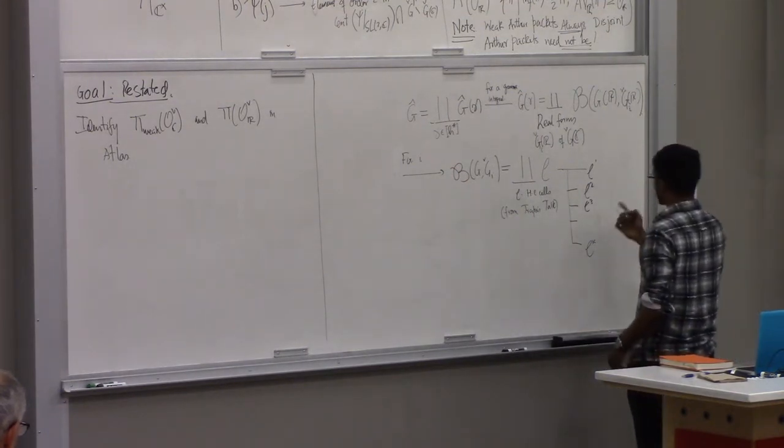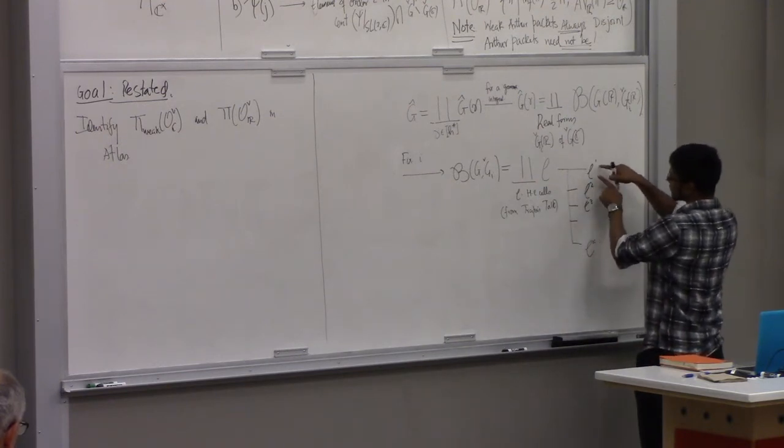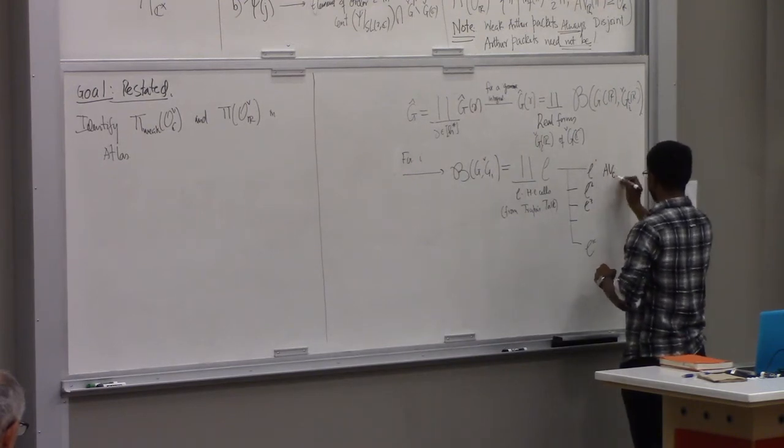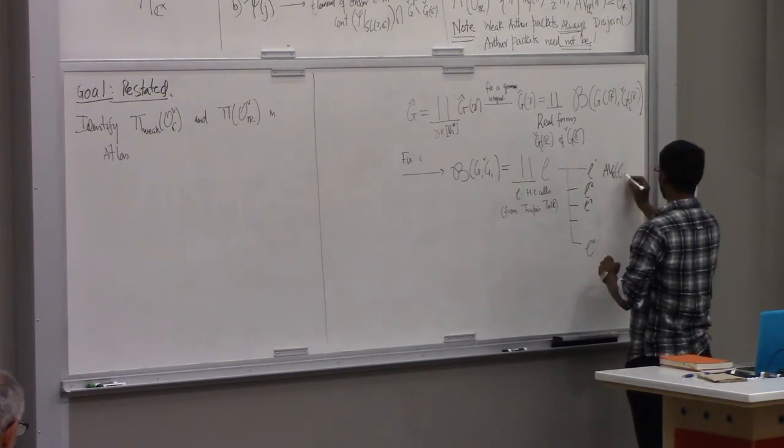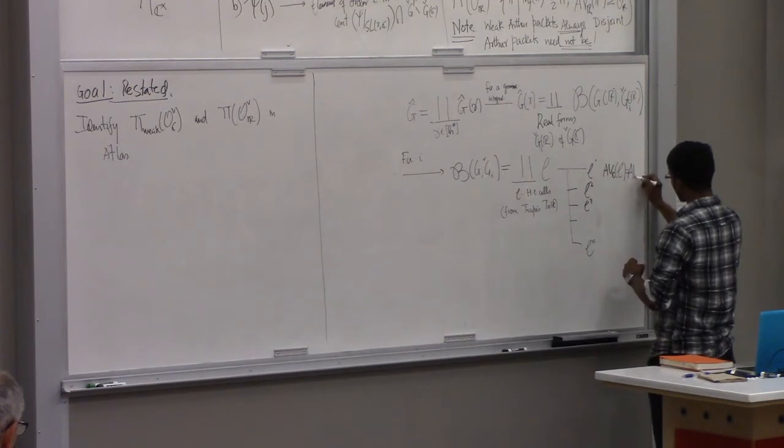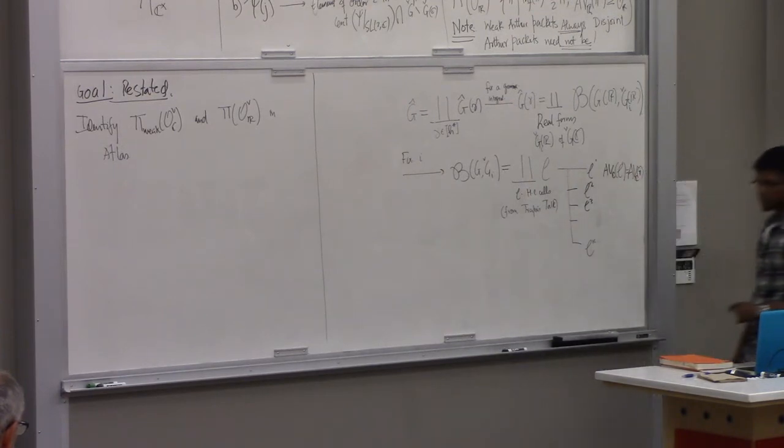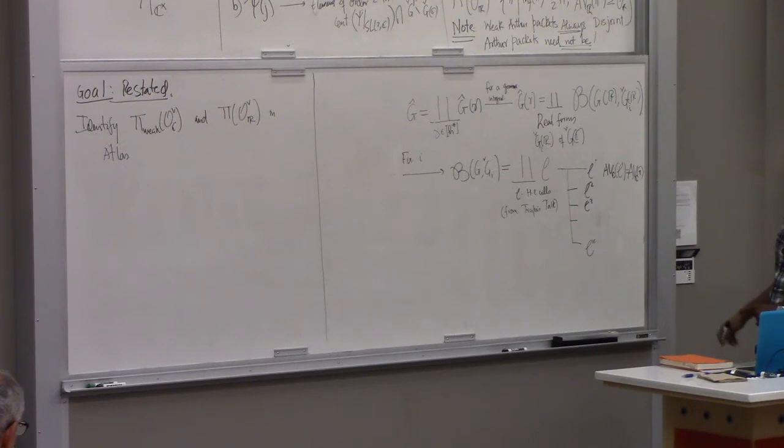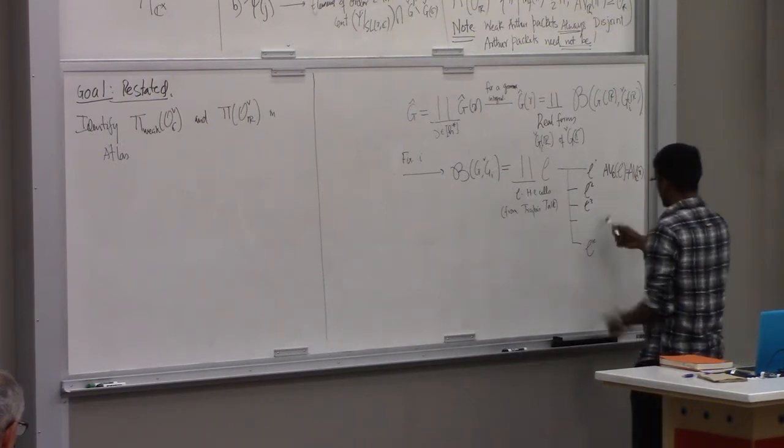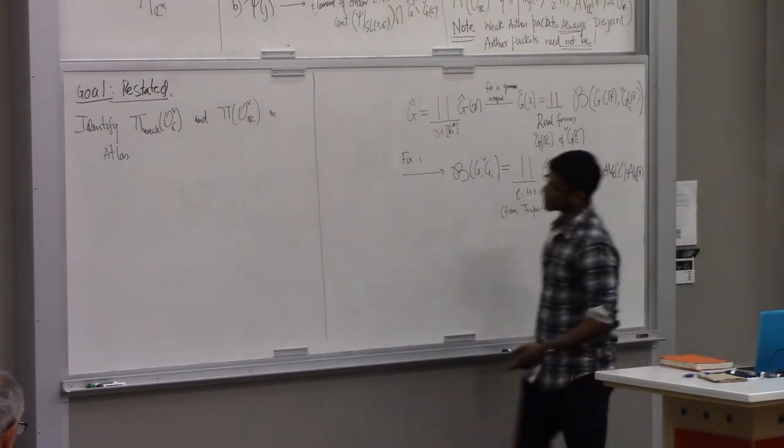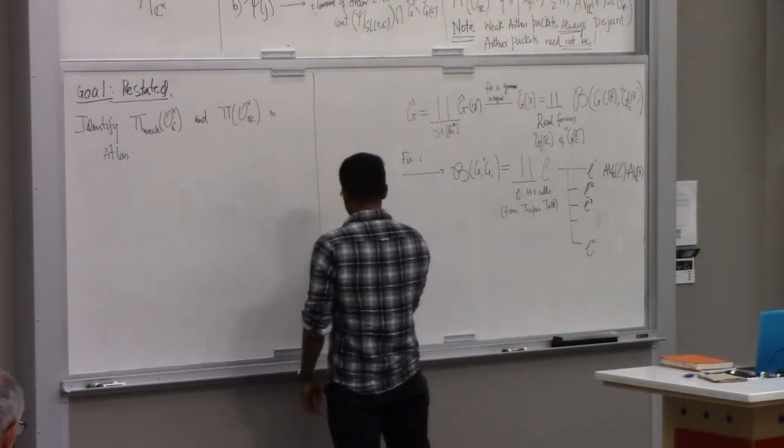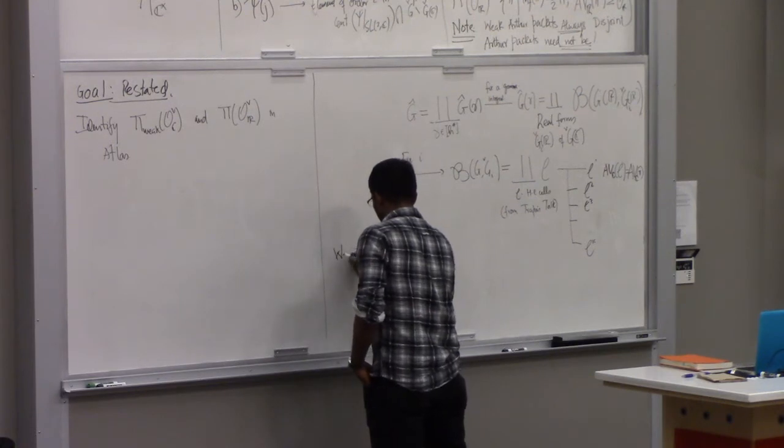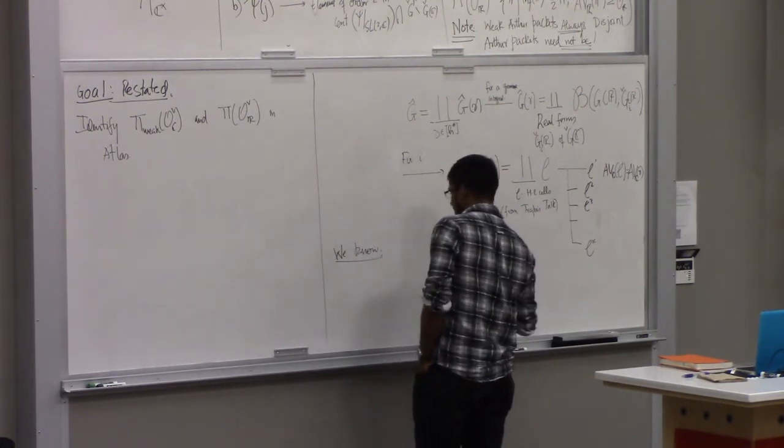Every computation that we make for associated varieties would come down to making the computation on each of these cells. A result of Trapa's was that computing the associated variety of the cell, so if you want to compute the complex associated variety, that is AB_C of C1, this is the same as computing the complex associated variety of a representation pi that lands inside the C cell, and it's going to be fixed over the cell.